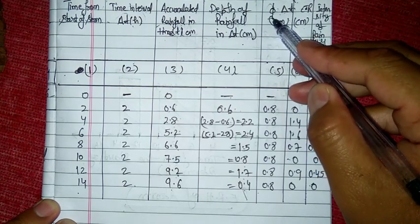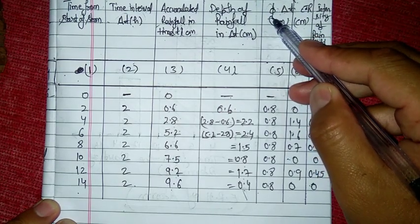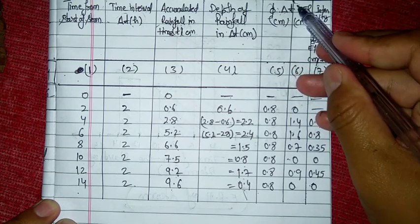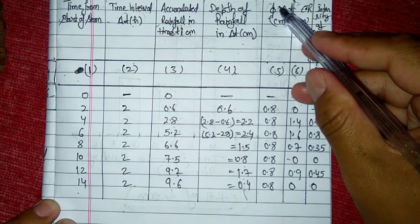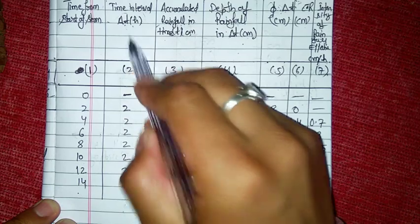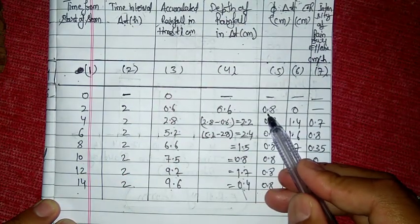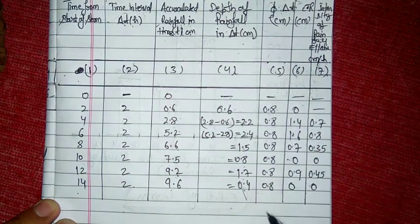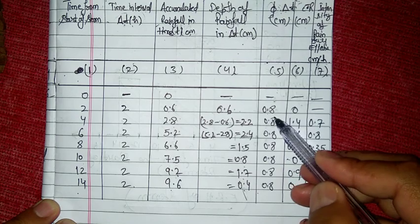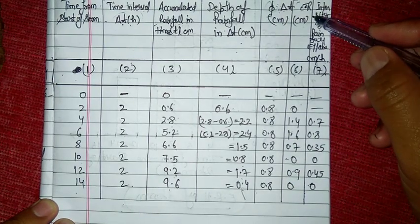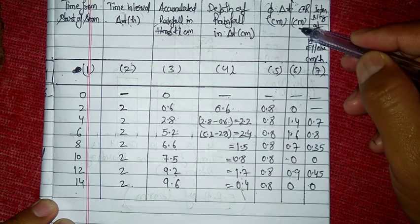Next, we calculate column 5: phi × delta t. The phi index is 0.4 cm/hr, multiplied by delta t of 2 hours, giving a constant value of 0.8 centimeters for every time interval throughout the storm.